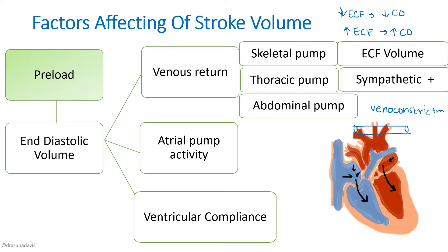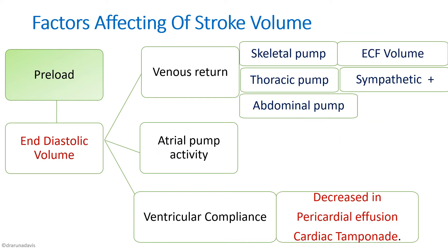Atrial pump activity is the next factor affecting end diastolic volume. Normally the role of the atria is less because ventricles fill passively during diastole, but in conditions like exercise where diastole time decreases, atrial systole contributes significantly to ventricular filling. Ventricular compliance is also important — in conditions like pericardial effusion or cardiac tamponade, the ventricles cannot relax completely, leading to decreased ventricular filling, decreased end diastolic volume, and decreased stroke volume.